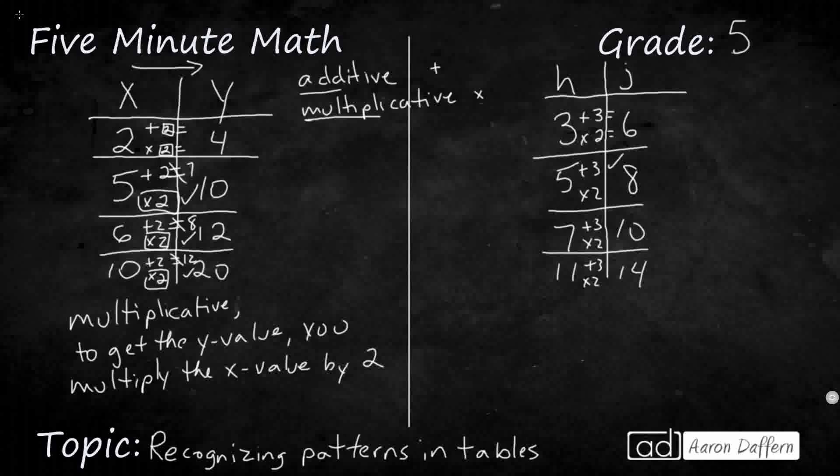5 plus 3, that works. 5 times 2, nope, that doesn't work because it should equal 10. 7 plus 3, that works. And 7 times 2 doesn't work because it should equal 14. And then I've got my 11 plus 3, 11 times 2. Oh, it's getting really large. No, that should be 22.